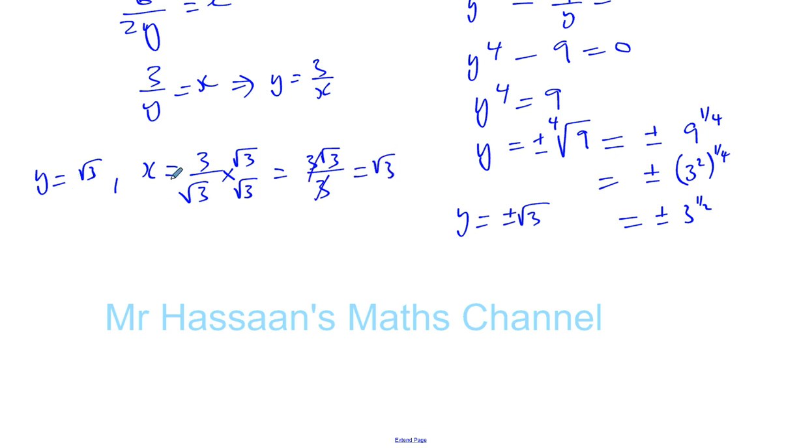So when y is root 3, x is root 3. That's the point (root 3, root 3). And we also know that y can be negative root 3.